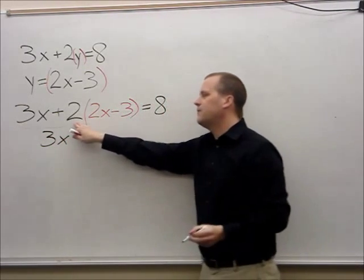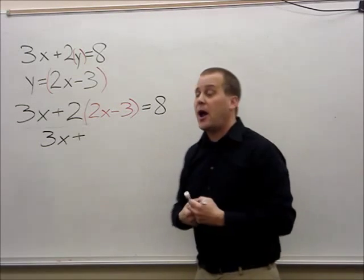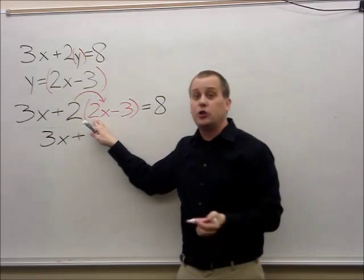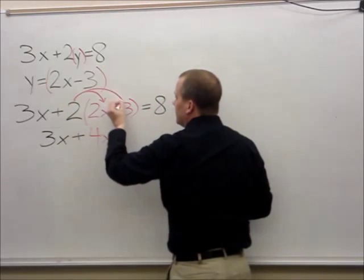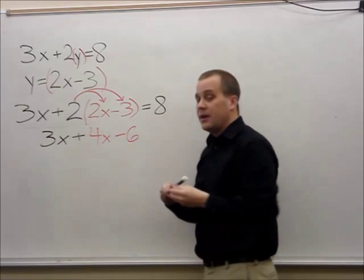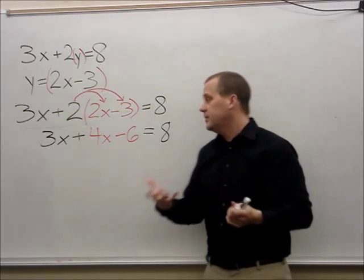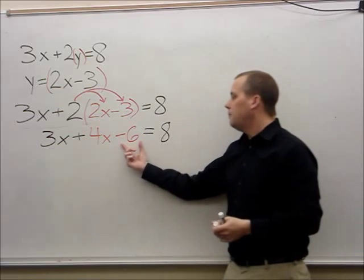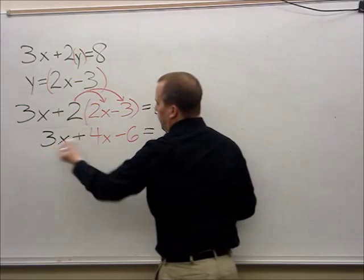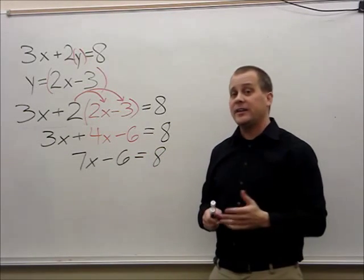I notice that 2 is in front of the parentheses, so I have to use the distributive property. I take 2 and multiply it by all the numbers inside: 2 times 2x is 4x, and 2 times negative 3 is negative 6. Now I'm done distributing. Looking at my equation, I have 3x plus 4x minus 6 equals 8. I combine like terms: 3 plus 4 is 7x, minus 6, equals 8.